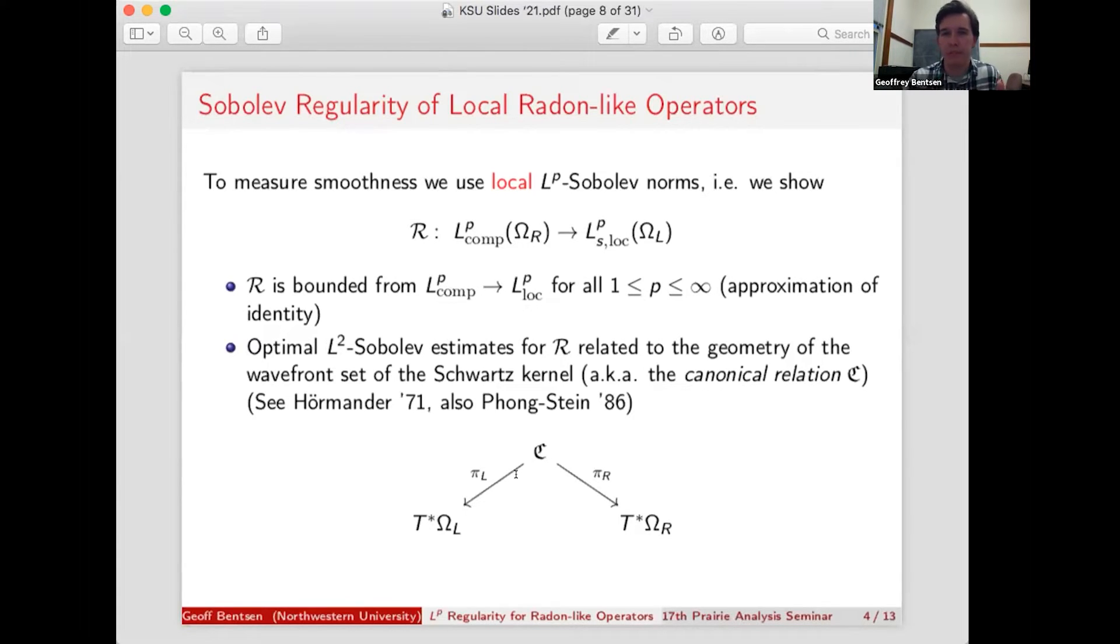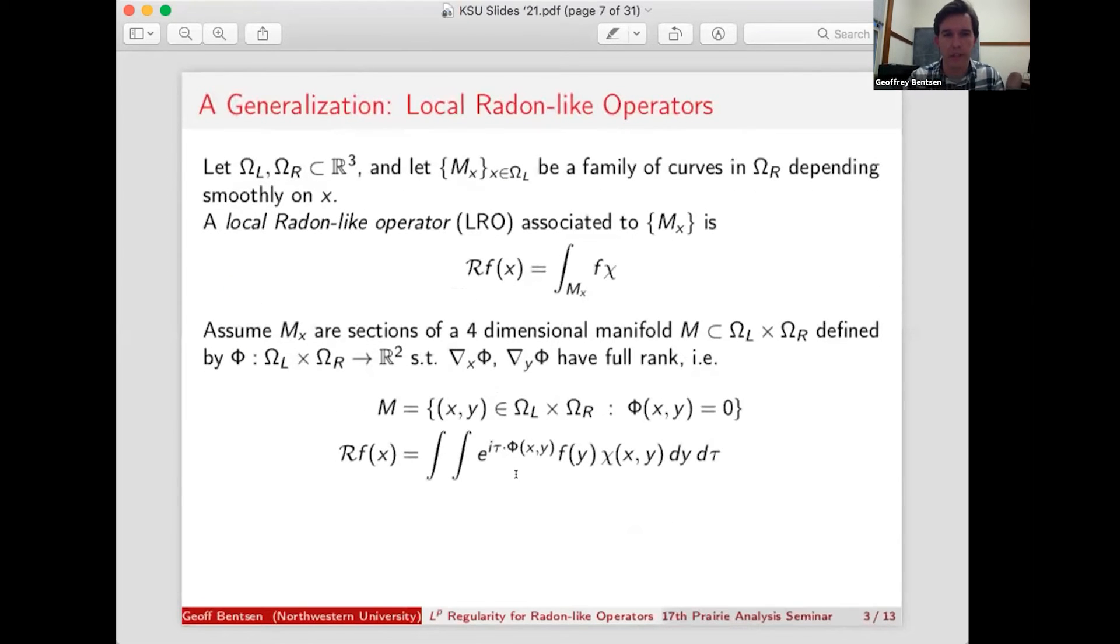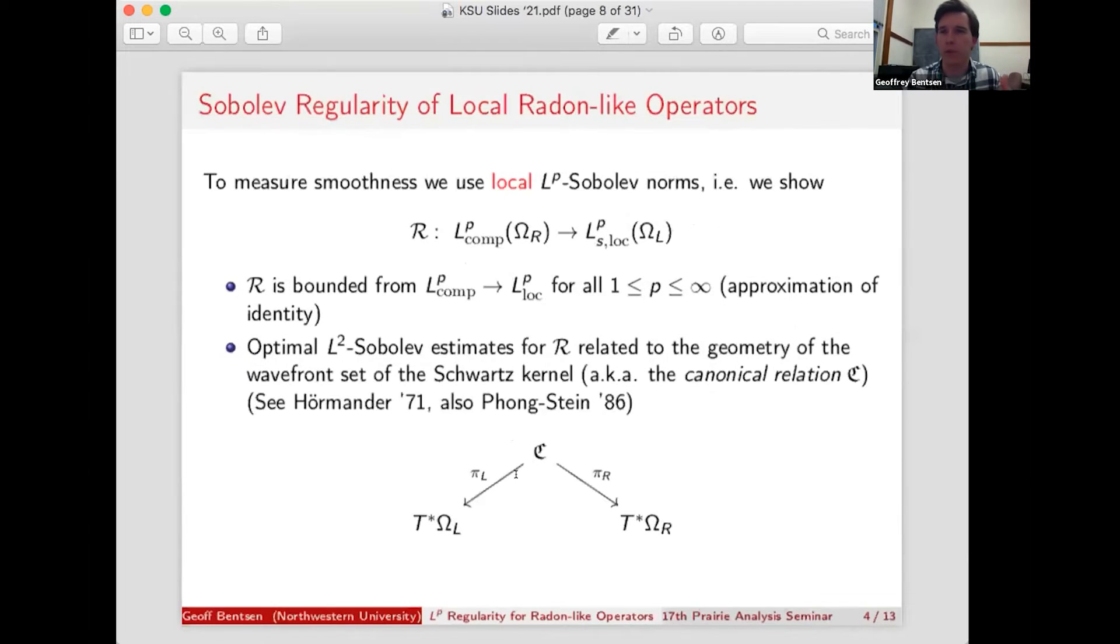So what are some basic facts about these operators? First off, unlike in the case of singular radon transforms, because there's no Calderon-Zygmund kernel, these operators are bounded on LP always, at least locally, for all values of P. And there's an approximation of the identity argument involving this oscillatory integral representation in order to prove that.